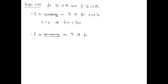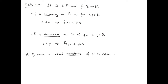Similarly, if we've got a function that's decreasing, we pick two values in S such that X is less than Y, and if we look at the function values at those points, it reverses the ordering: if X is less than Y, then F of Y is less than F of X. That's what it means for the function to be decreasing. Putting these two types together, a function is monotonic if it is either increasing or decreasing.